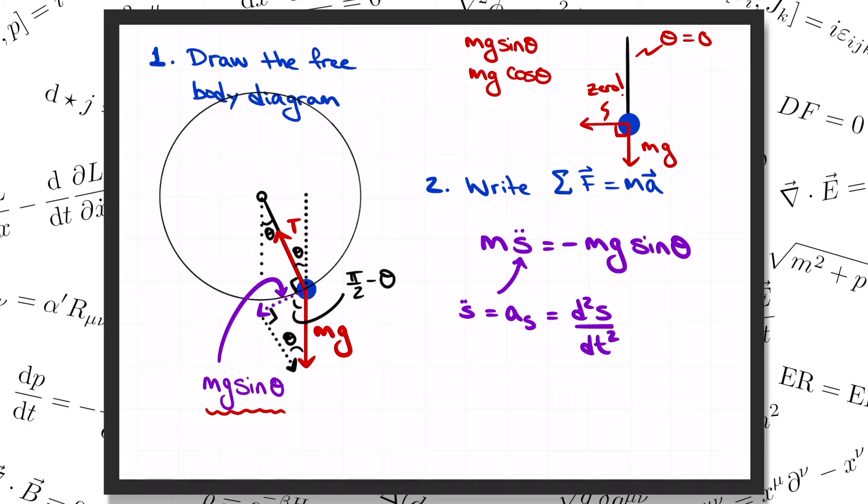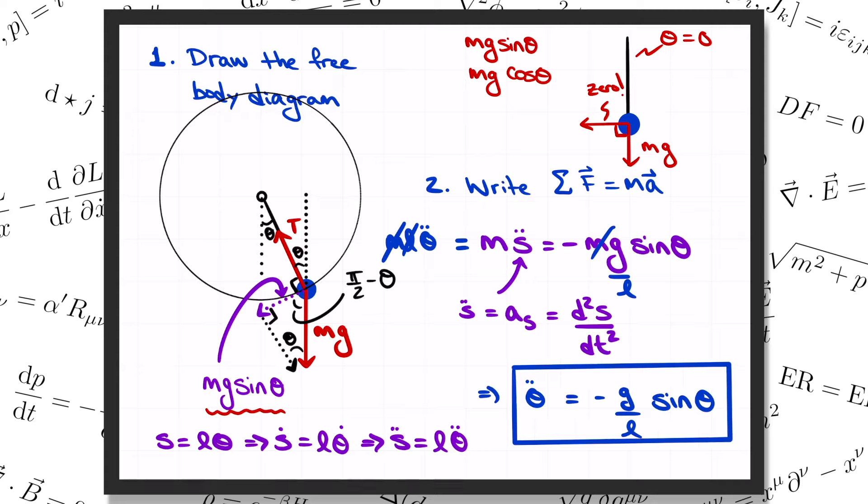I want to write everything in terms of theta here, so I'm going to use the fact that s is equal to l times theta to replace s double dot with l times theta double dot. I'm allowed to do that because l is just a constant. Then I can replace m s double dot on the left-hand side of f equals ma with m times l times theta double dot. And then if I cross out some of these common factors, we can simplify our equation to theta double dot equals minus g over l sine of theta. This is what we were after. It's called the equation of motion for theta. It's the differential equation that governs the motion of the pendulum.